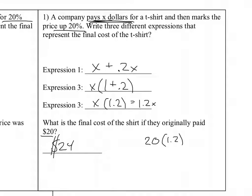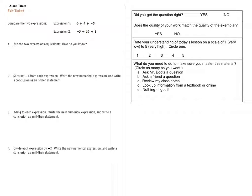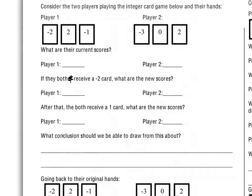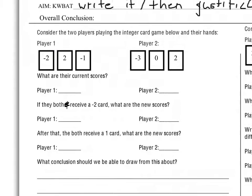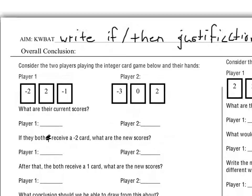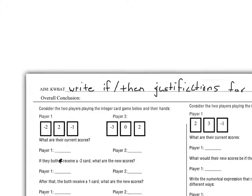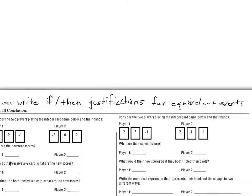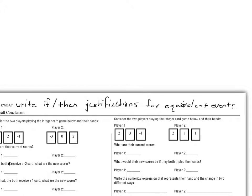Alright, so let's look at our aim for today. What I want us to consider is that we're going to write if-then justifications for equivalent events.